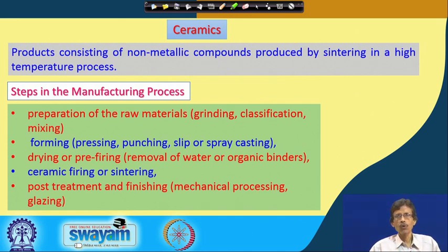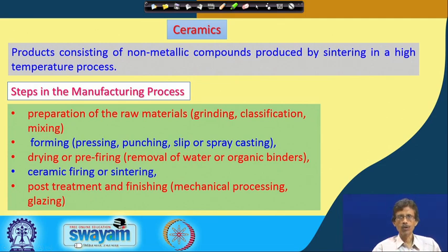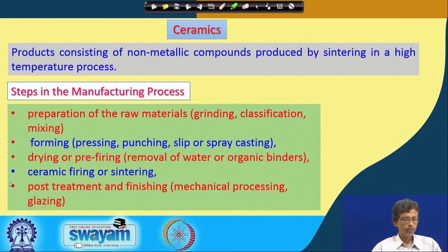The second step is the forming step — how you form these things. This involves pressing the mixed material, punching, slip casting, or spray casting. You have a mold and get a casting material. The third step is drying or pre-firing: either you dry in air or go for the pre-firing process — not the final firing — but initial drying to remove water vapor, which can be removed at a temperature of 120 to 150 degrees centigrade.